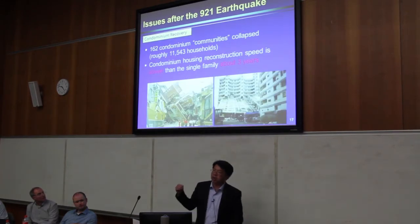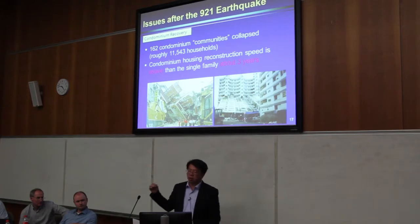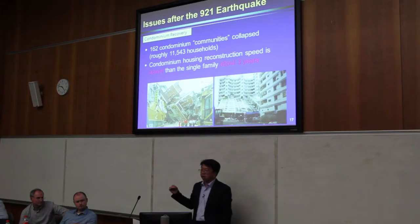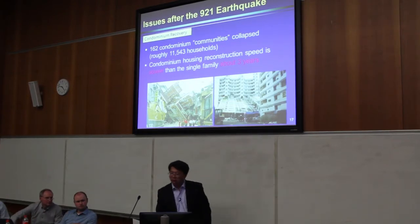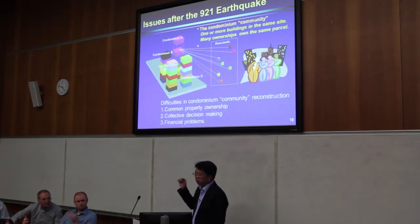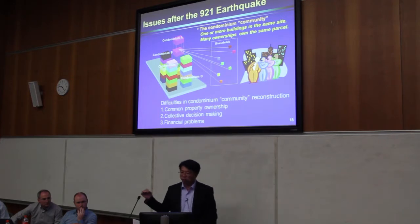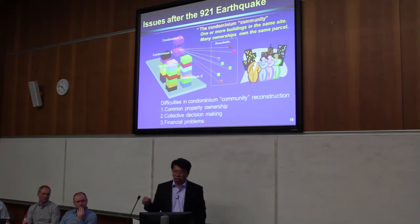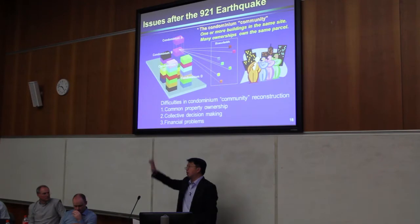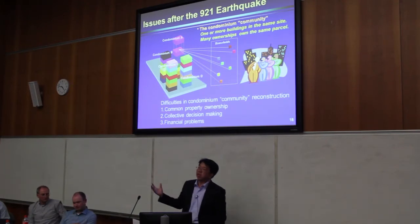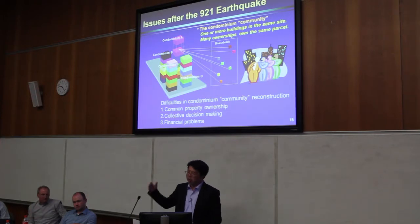Here is another critical pattern — we call it condominium recovery. At that time, 162 condominium communities collapsed. The condominium housing reconstruction speed was far slower than single family housing — about three years later. Why so slow? Because in a single parcel of land there are many buildings, and in one building there are many households. It's very difficult for them to make collective decisions. After a major disaster, people move to stay with their parents and it's very difficult to contact each other and hold meetings to decide whether to rebuild or tear down.